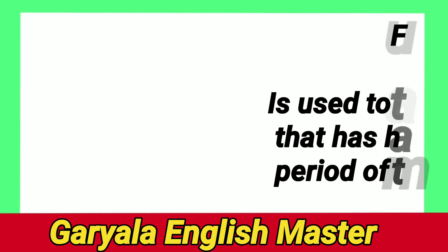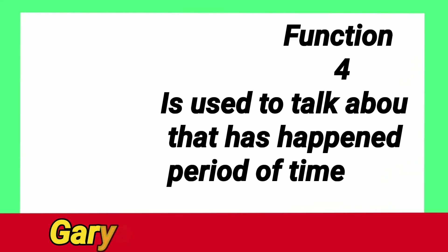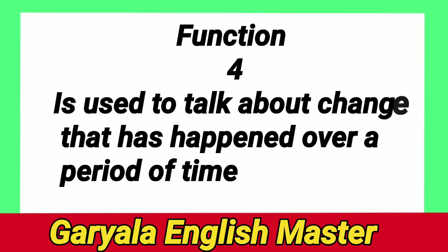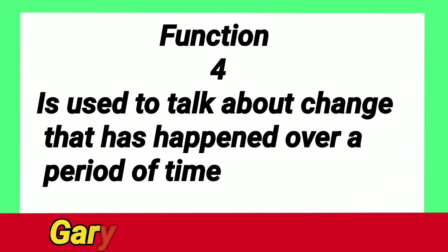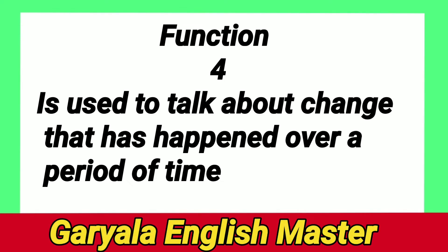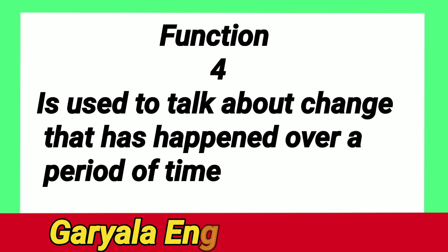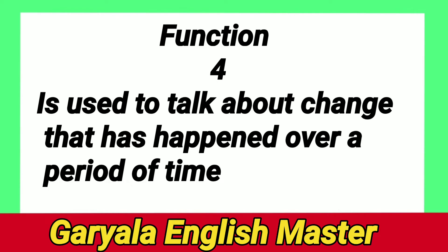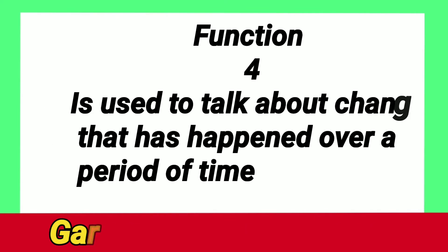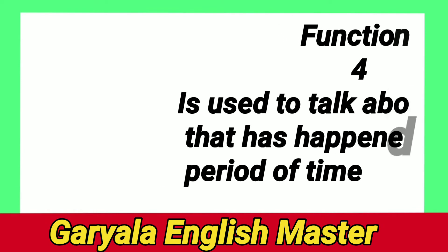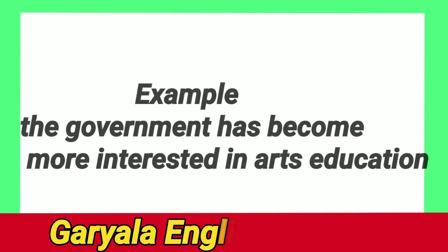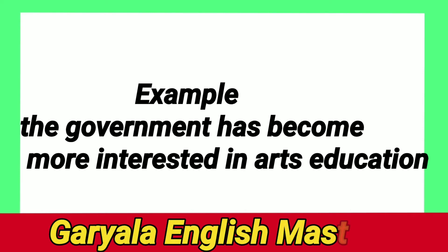Function number four: Present Perfect is used to talk about a change that has happened over a period of time. An example will explain the definition: 'The government has become more interested in arts education.' This shows that a change has occurred.